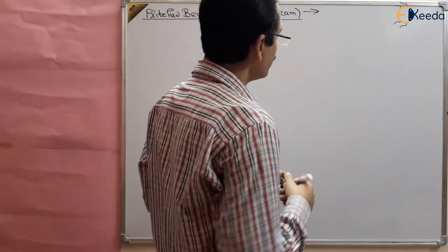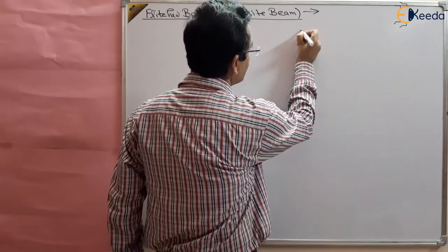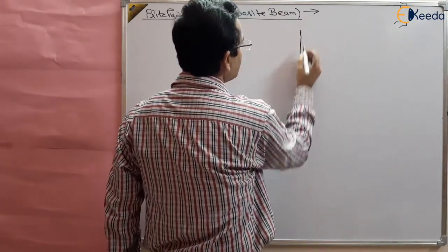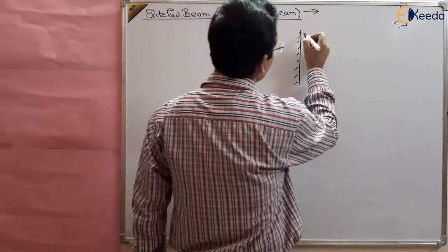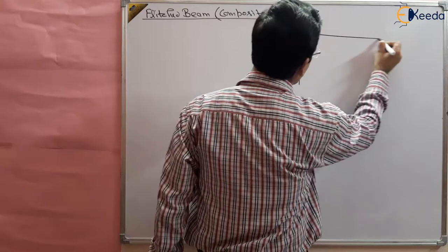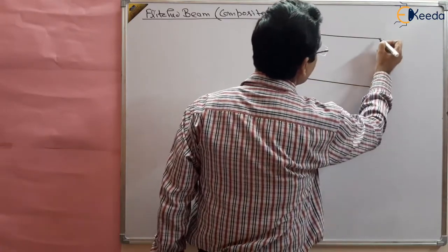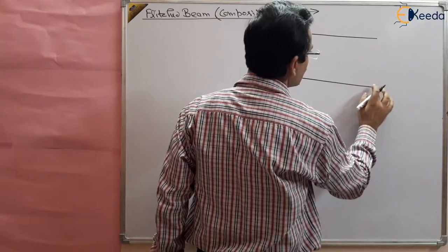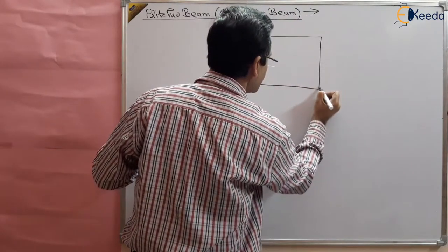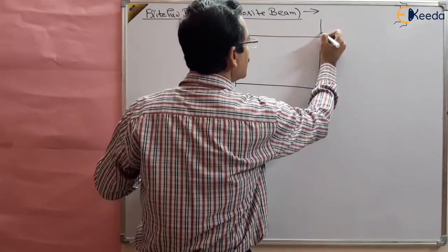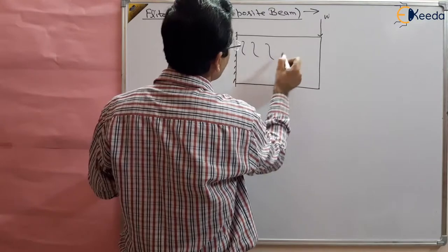Say we have a wooden beam and some load is applied to this wooden beam, and it is very weak in bending. I am making a bigger beam so that I can show the cross-section of this beam. Some load is applied to this beam — say this is a wooden beam.